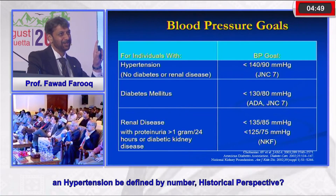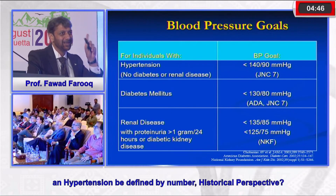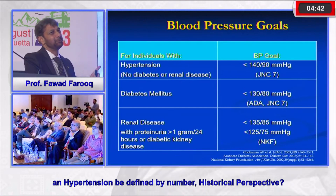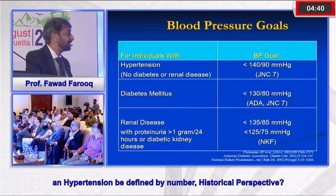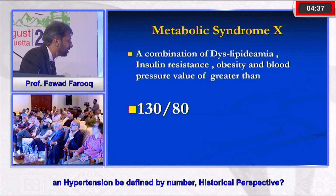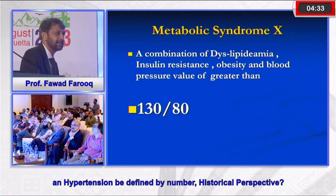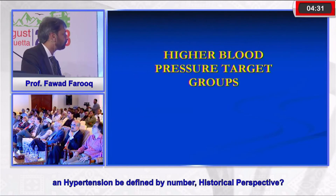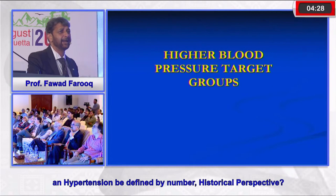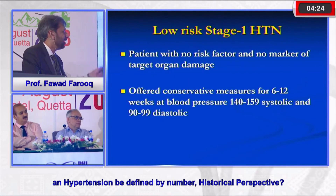The point is that it is not just one number which can define hypertension. You have to look at your patient, their characteristics, and then define what target should be set for that individual. Similarly, high-risk patients with a constellation of different risk factors require a target of less than 130/80.